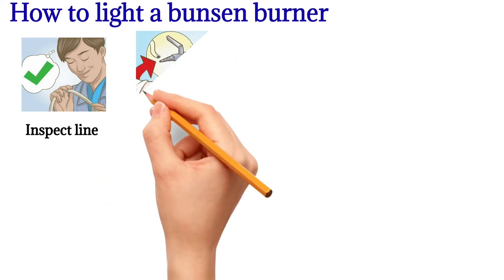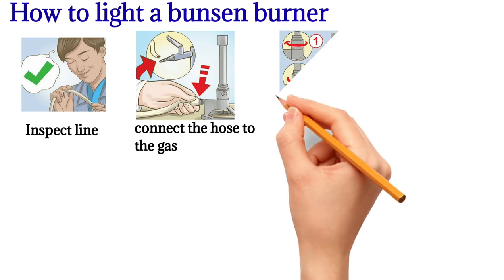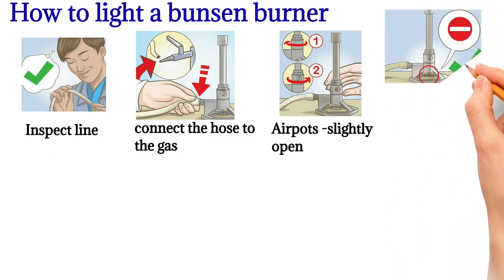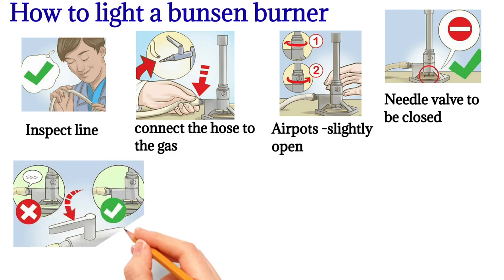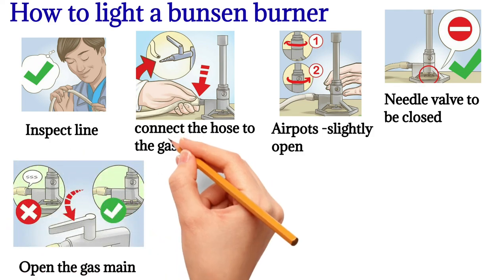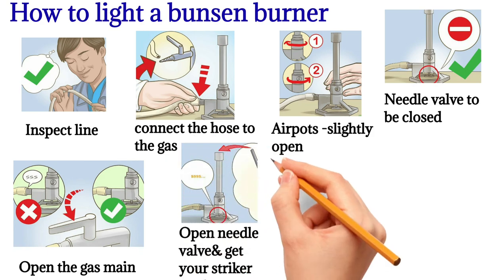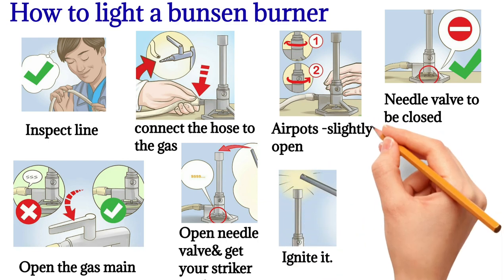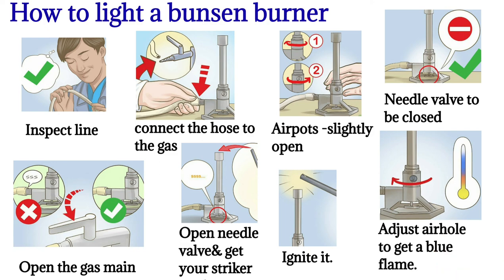How to light a Bunsen burner: Step 1 — inspect the lines and make sure they are okay. Step 2 — connect the hose to the gas. Step 3 — airports to be slightly open. Step 4 — needle valve to be closed. Step 5 — open the gas main. Step 6 — open the needle valve and get your striker ready. Step 7 — start igniting it.